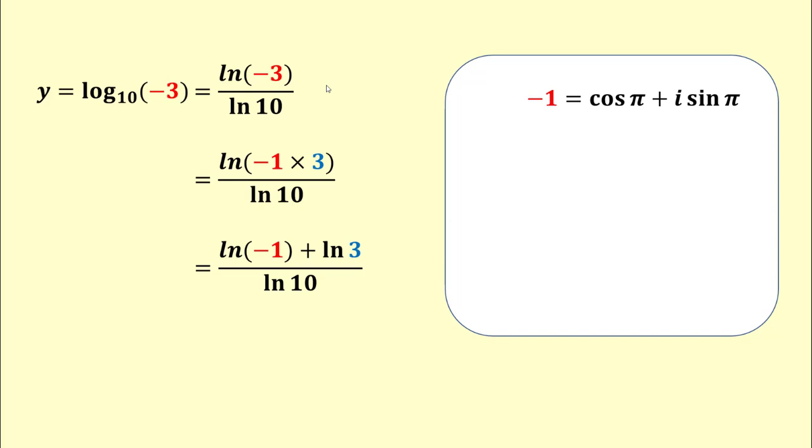I am ignoring general form here. By using Euler's formula, we can write negative 1 equals e to the i pi. Taking the natural log on both sides of this equation, we get natural log of negative 1 equals i times pi, which is purely imaginary number.